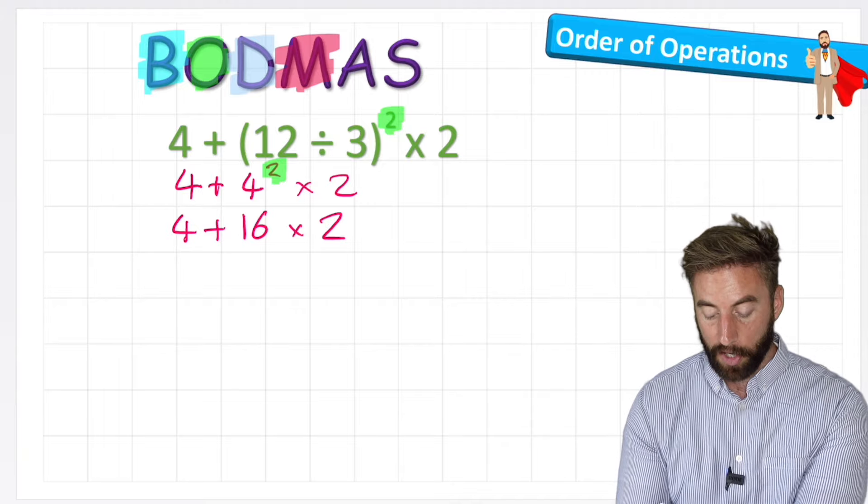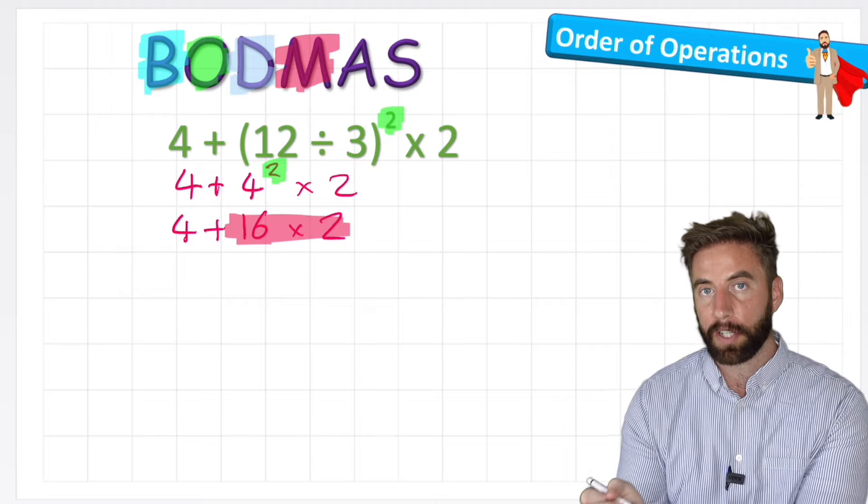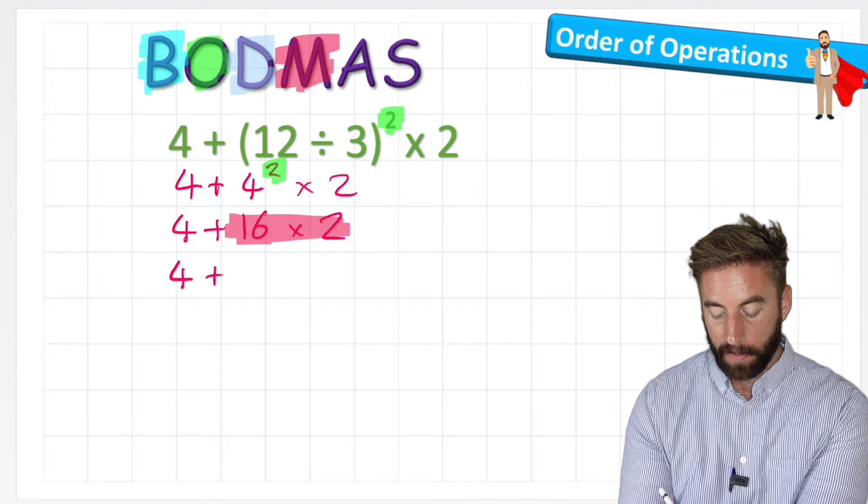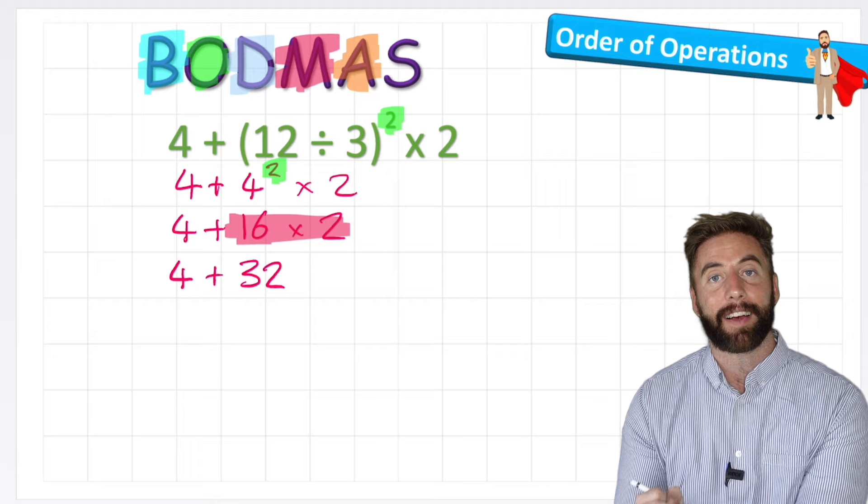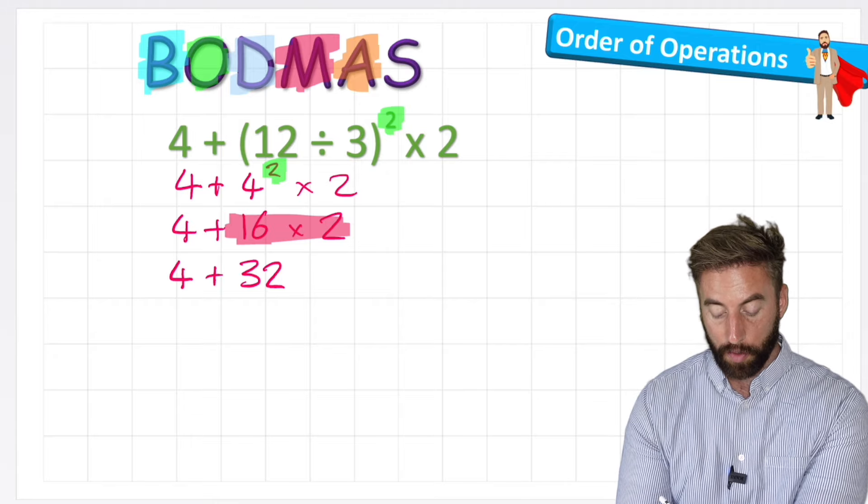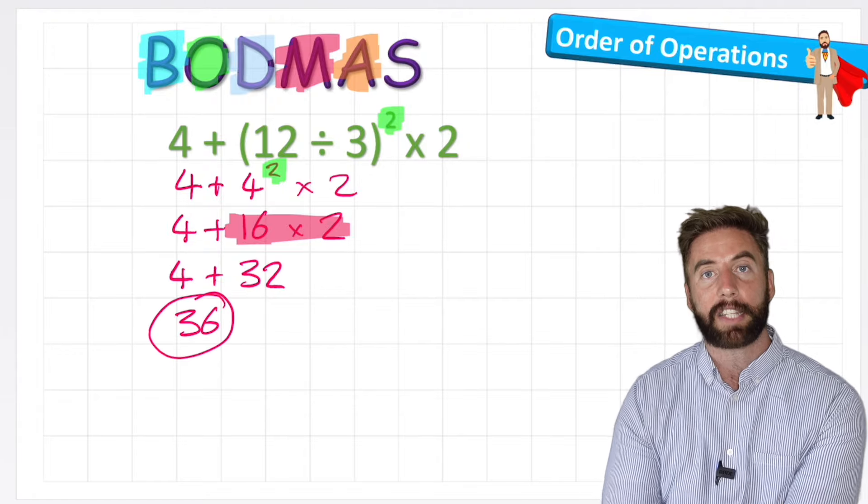So I can move on to my multiplication. And my multiplication is this part here, 16 times 2. And the answer to 16 times 2 is 32. So my next row would be 4 plus 32. And I can now do my addition, and that's our last step actually. So I can now do 4 plus 32, and 4 plus 32 equals 36. So my total answer for this expression is 36.